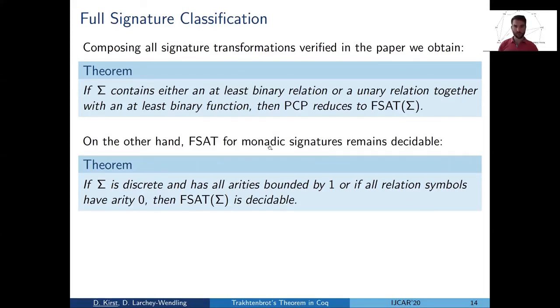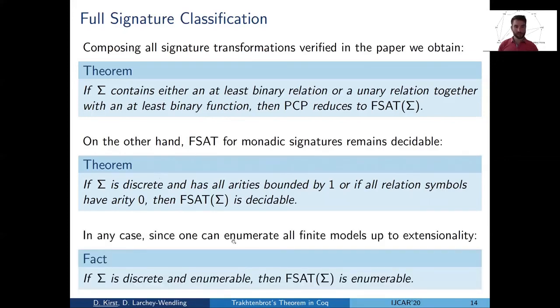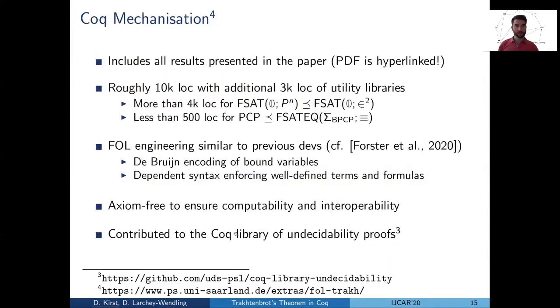In the paper, we also complement this with the positive results that one can get. So if the signatures are monadic, then F-SAT is decidable. And in any case, we can always enumerate all models up to extensionality. And so we can also enumerate all formulas that are finitely satisfied with it.